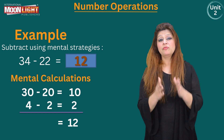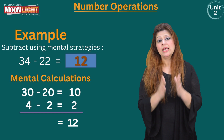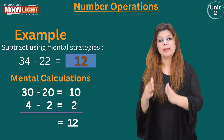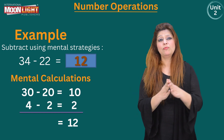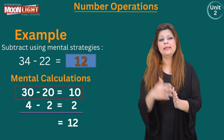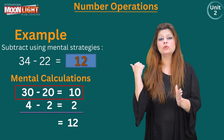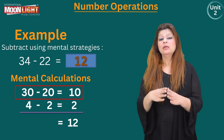The first thing I am going to do is subtract the digits at the tens place of both numbers. 30 minus 20 equals 10, as you can see over here.